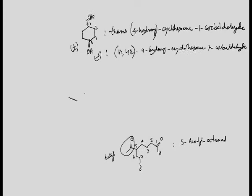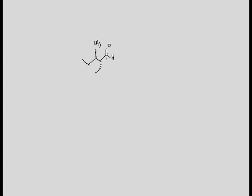Drawing again: CH3, CH2, with positions 1, 2, 3, 4, 5. Aldehyde will get position 1. What will be the stereochemistry? This is R, this is also R. So 2R, 3R. First we have to give the chirality: 2R, 3R, 2-ethyl, 3-methyl, pentanal. This is the IUPAC name.